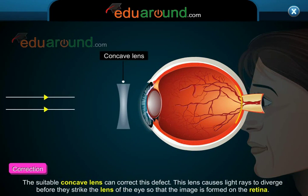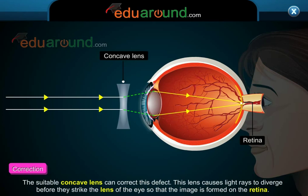A suitable concave lens can correct this defect. This lens causes light rays to diverge before they strike the lens of the eye, so that the image is formed on the retina.